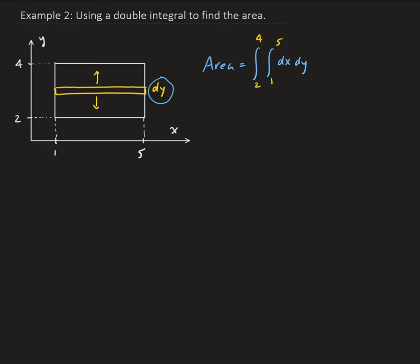So we're going to do the integral of dx from one to five first. The integral of dx is just x. We evaluate from one to five, so that's going to give us five minus one, which gives us four.